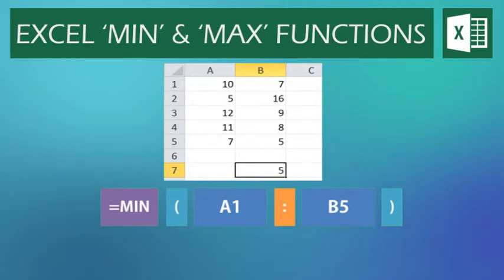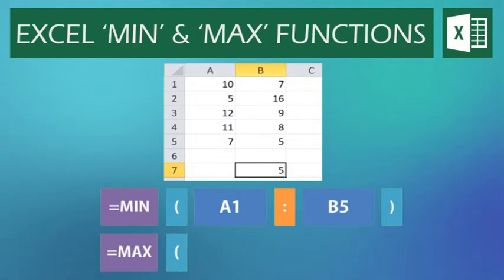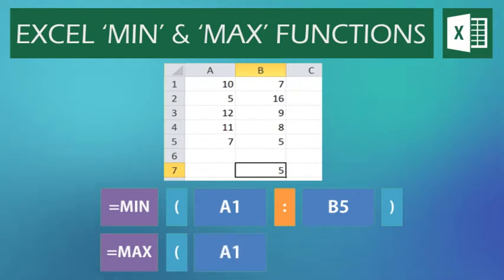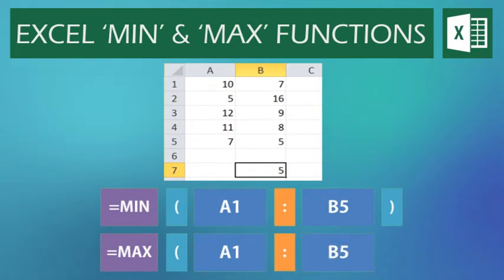The MAX function works in exactly the same way, only this time it's going to return the highest value. So we type equals MAX, open brackets, then the first part of the cell range, again cell A1. Because it's a cell range, we type a colon, and then the other part of the cell range, in this case B5. Close the brackets to finish the formula.